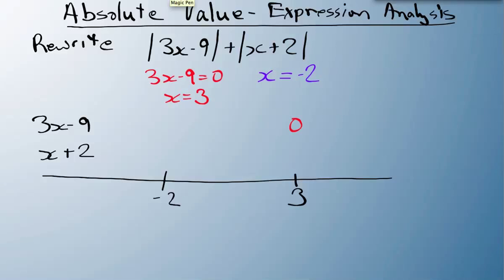Anytime x is less than 3, the expression is negative, and because we have an absolute value, we'll turn it into a positive. When x is greater than 3, it's positive. I do the same thing with x plus 2 equals zero at minus 2. On the left side it's negative, on the right side it's positive.